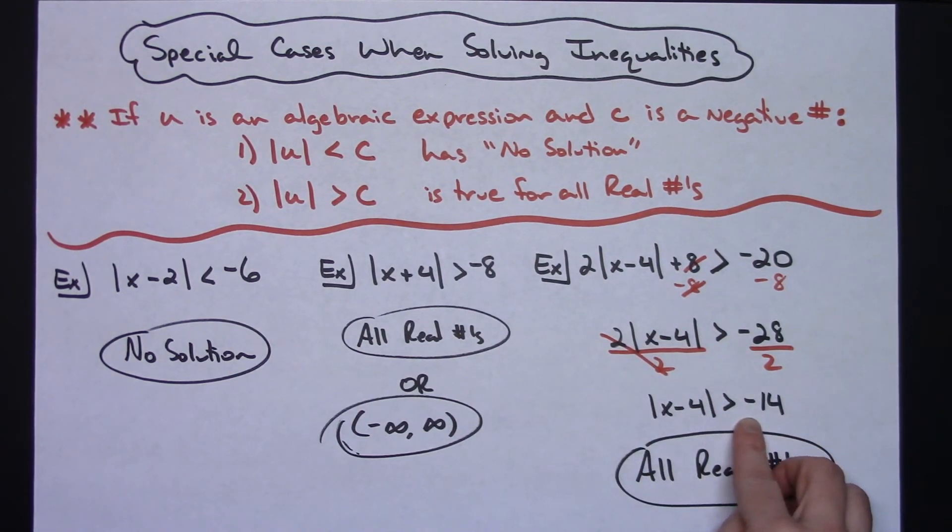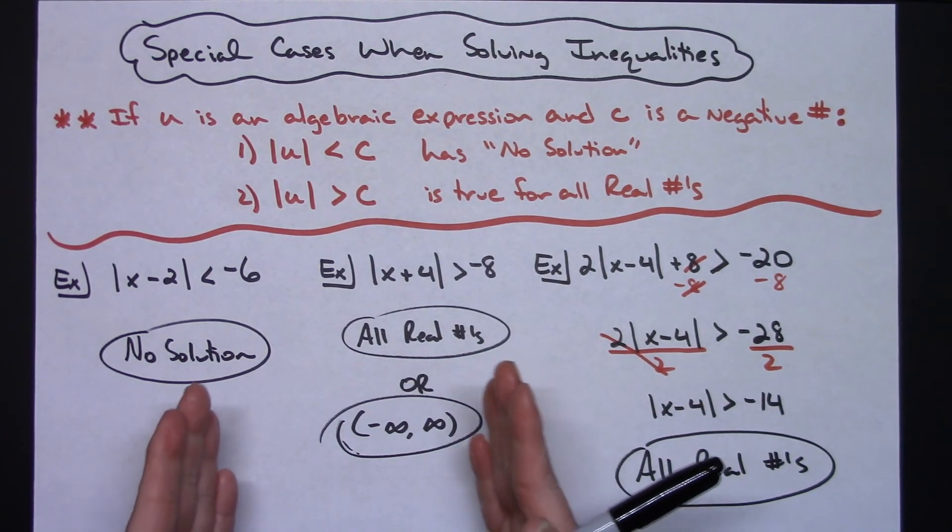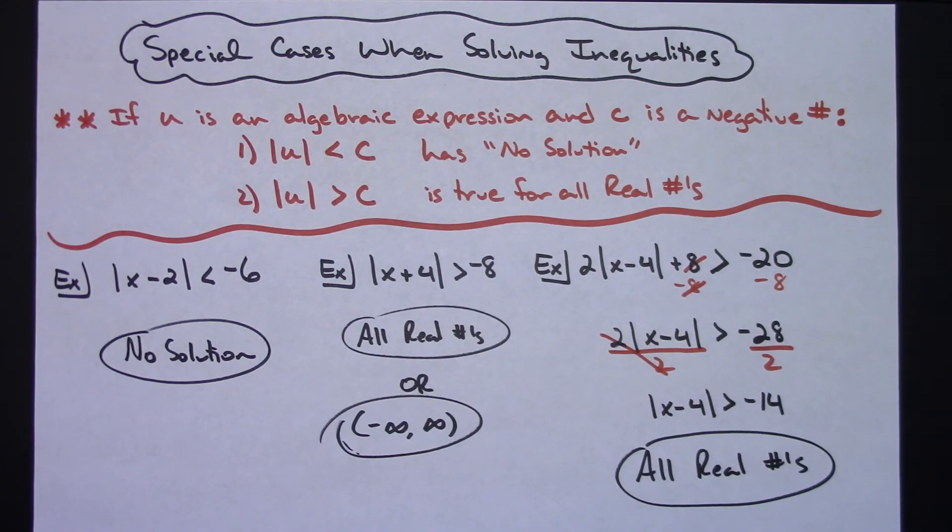So you definitely do have to isolate those absolute value bars first, just to make sure. But then as long as you have got this simple little rule memorized, your answers are going to be pretty simple and straightforward.